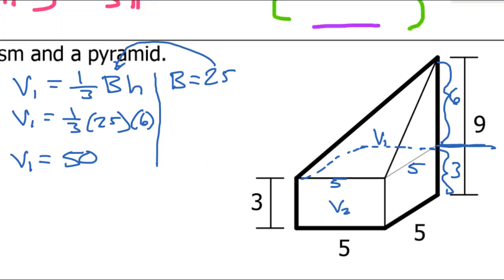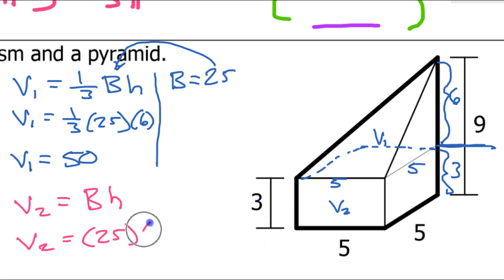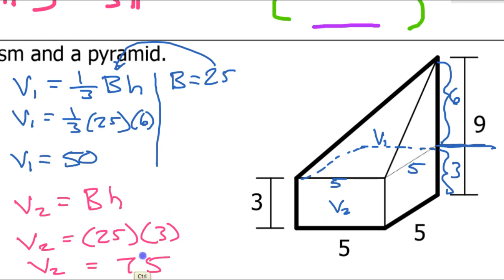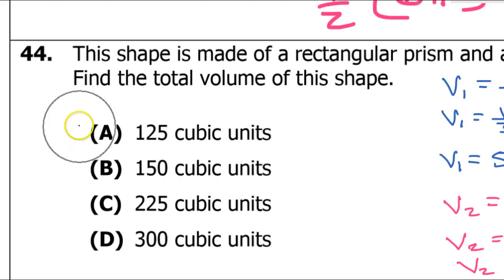Volume of the prism is area of the base times the height: 25 times 3 equals 75. Total volume equals volume 1 plus volume 2: 50 plus 75 equals 125 cubic units. The answer is A.